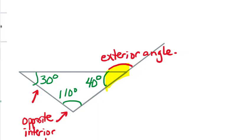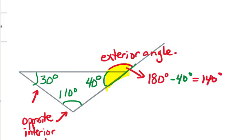I did not mark the measure of the exterior angle, but we can quickly figure that out because the exterior angle forms a straight angle with the interior angle of 40 degrees. So if we wanted to find the measure of the exterior angle, we take 180 degrees and subtract the 40 degrees of the inside part, which leaves us with an exterior angle of 140 degrees.